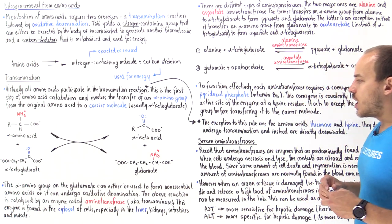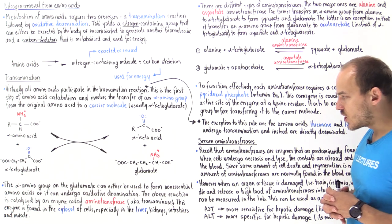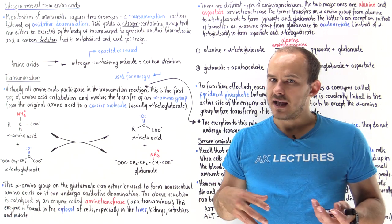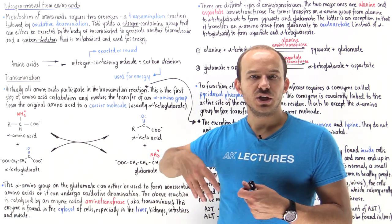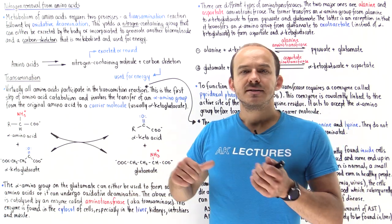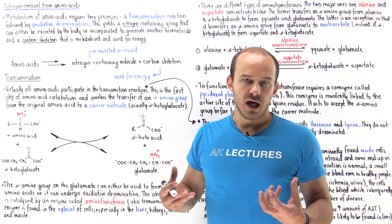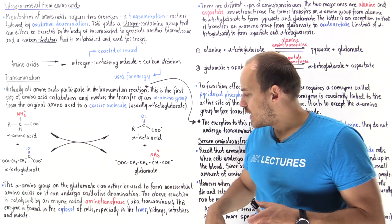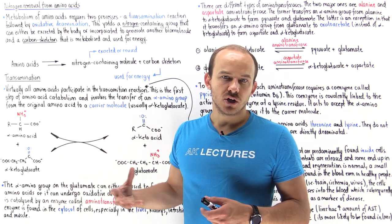A final important point: if we find too many transaminases within our blood, this can be a marker of disease. Aminotransferases are found in the cytosol of cells, but if cells undergo death and lysis, they release their contents — including the aminotransferases — into the blood. In normal healthy individuals, baseline cell necrosis means small amounts of aminotransferases are found in the blood, but a large increase indicates significant cell necrosis in major tissues.